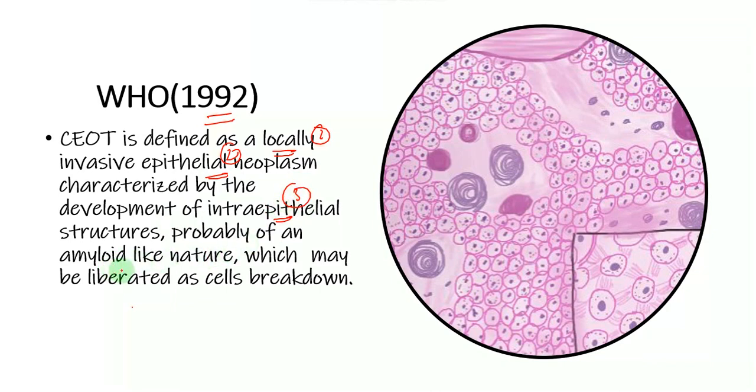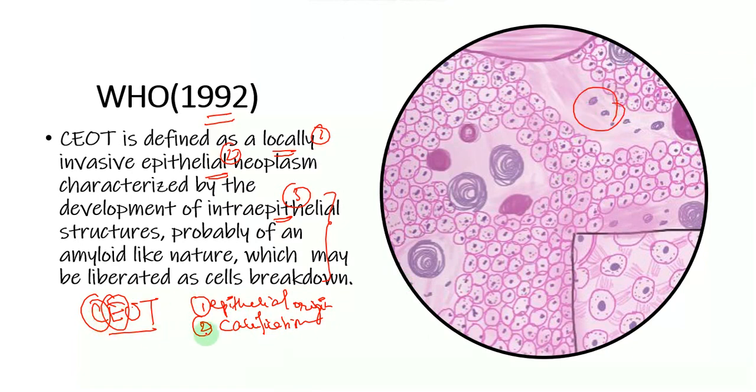In the name and definition itself, we have derived three main important things. The epithelial part tells us it is of epithelial origin. The calcifying part tells us there is presence of certain calcifications as you see scattered around here. And the definition tells us about the presence of intra-epithelial structures such as these eosinophilic amyloid-like material. You'll understand this better as we get into its histopathology.